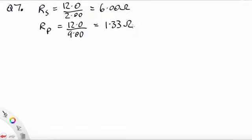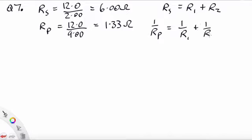Now, we know that the series combination is going to be R1 plus R2, and the parallel combination tells us that 1 over RP is going to be 1 over R1 plus 1 over R2. So we have two simultaneous equations for R1 and R2. So what we're going to do is get R2 as the subject of the equation for part 1, and we're going to substitute that into equation number 2.